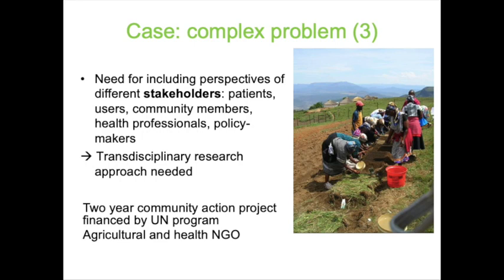We identified stakeholders — not beforehand calling them patients, because we wouldn't know who was HIV-positive. It's more about community members, as well as health professionals, policy makers, people in agriculture, education, and so forth. We drafted a two-year community action project financed by one of the UN research programs, involving besides us as a university, two NGOs: an agricultural NGO and a health NGO. Knowing it was a rural area, it would involve both agriculture, given the food insecurity, as well as health, given the high prevalence of HIV-AIDS.